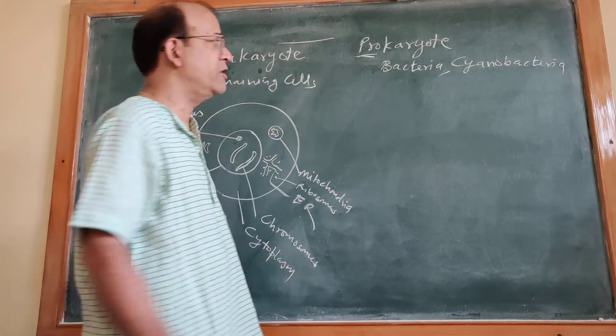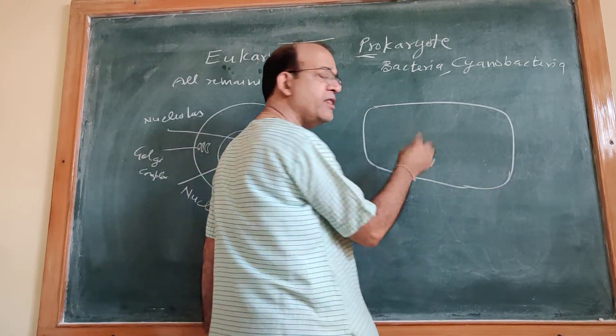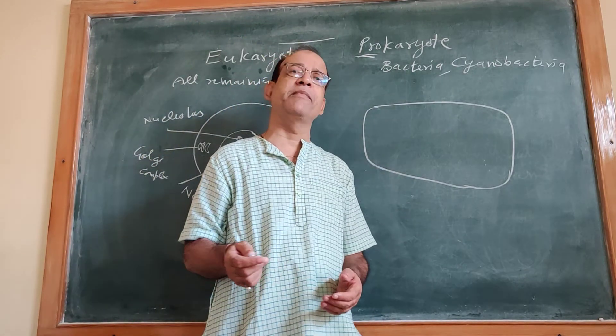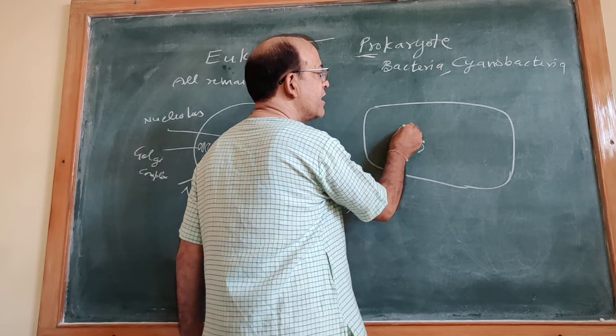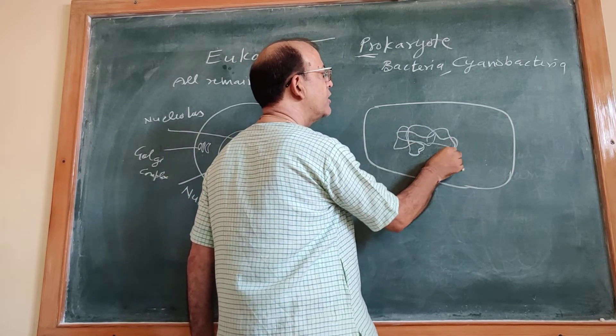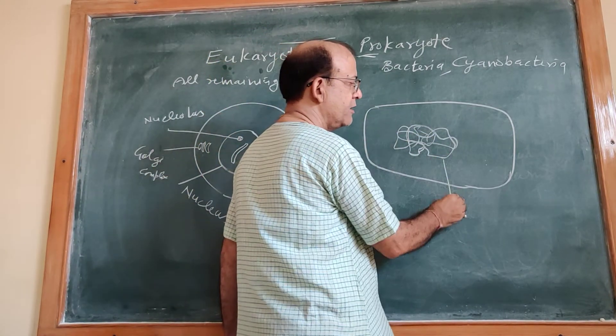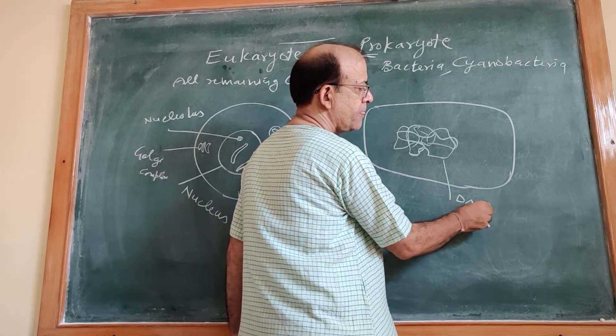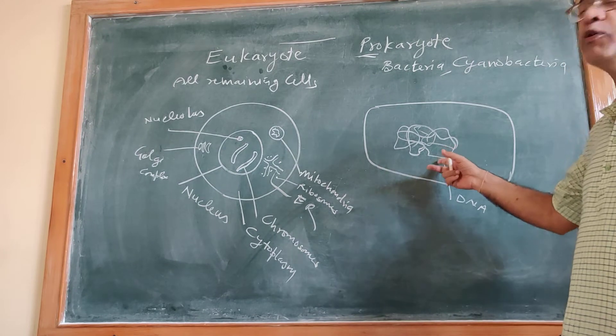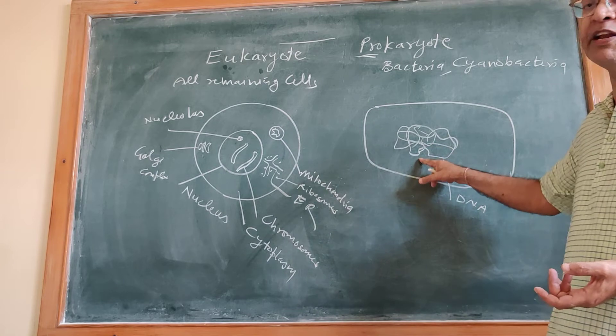Whereas in prokaryote, it is having, of course, a boundary. And in this boundary, the genetic material, its DNA, is present in the form of a thread-like structure. A thread-like mass of DNA is present. There is no nucleus. There is no nuclear membrane. There is no chromosome. Only a bunch of DNA is present as genetic material.